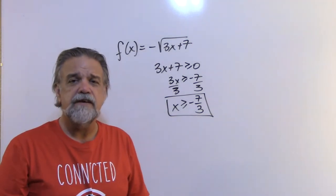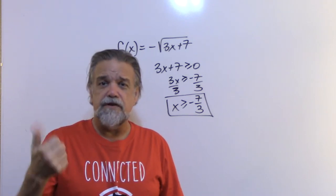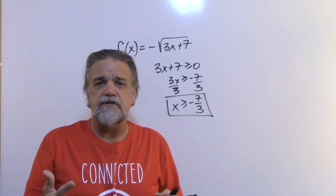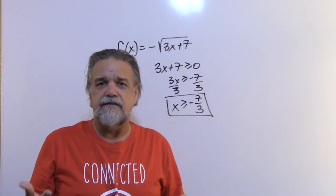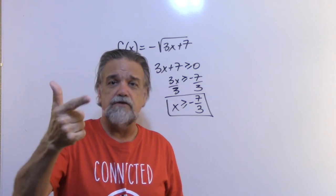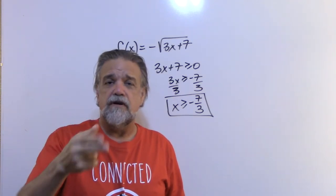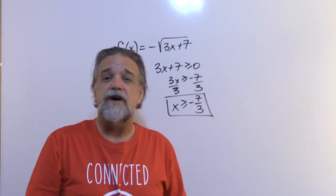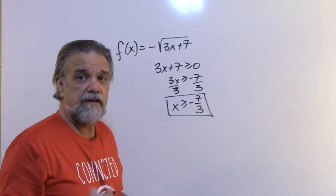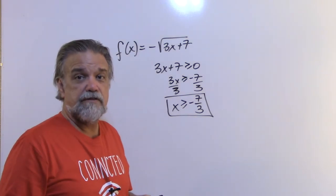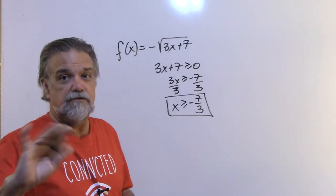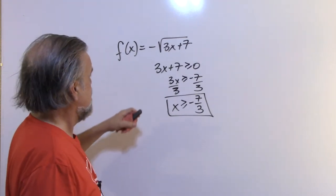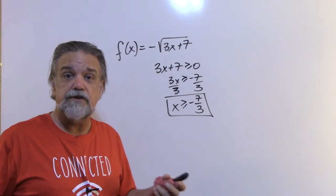When figuring out the domain, there are really only three rules that cannot be broken: don't divide by zero, don't take the square root of a negative number, and don't take the logarithm of zero or a negative number. Those are the big three. Right now you'll mainly see the first two. Once we get to logarithms, make sure whatever you're taking the log of is a positive number.